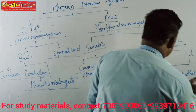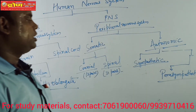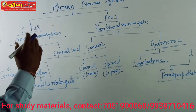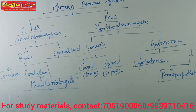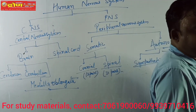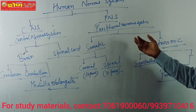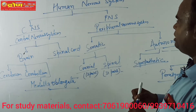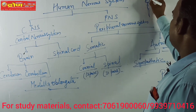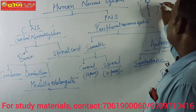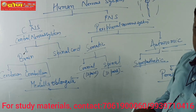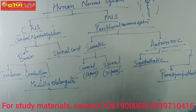Here we can see the nervous system classified. The complete classification includes the central nervous system and the peripheral nervous system. The peripheral nervous system includes the autonomic and cranial nervous systems. The central nervous system consists of the brain and spinal cord. This is the nervous system — clear.